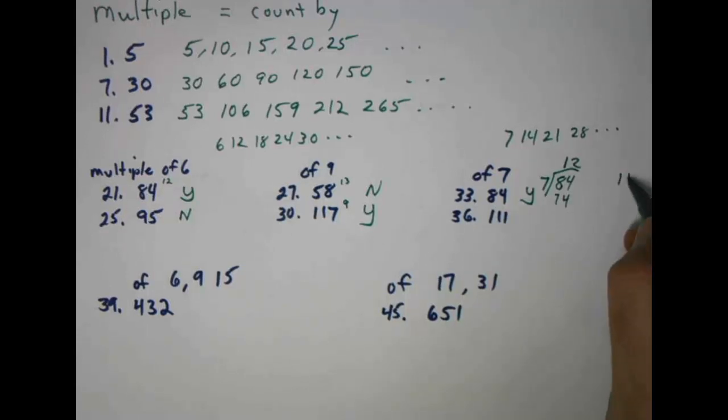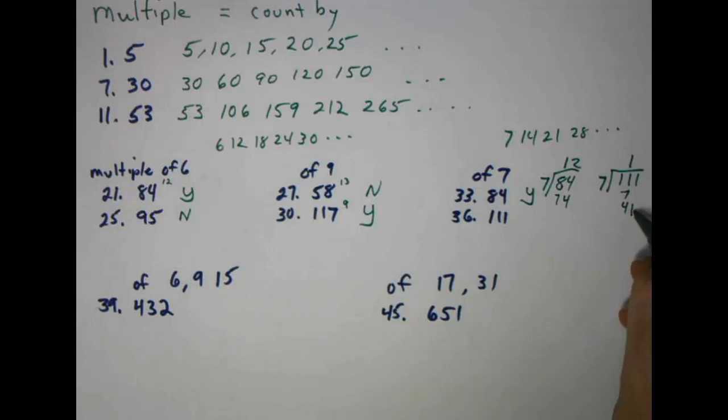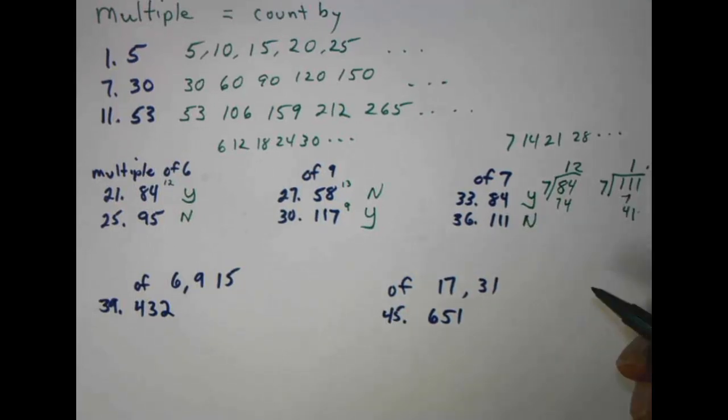One hundred and eleven. Same deal. We're going to have to either go on a calculator or go longhand. One times seven is seven. Four. Bring down the next number. Seven doesn't go into forty-one. It'll go into forty-two. So we're going to have a remainder or a decimal. So this would therefore be no.